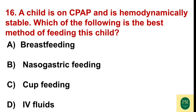A child is on CPAP and is hemodynamically stable. Which of the following is the best method of feeding the child? Option A: breastfeeding. Option B: nasogastric feeding. Option C: cup feeding. Option D: IV fluid. The correct option is Option B — nasogastric feeding.